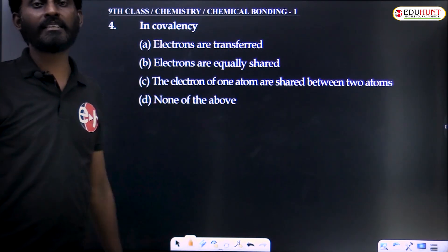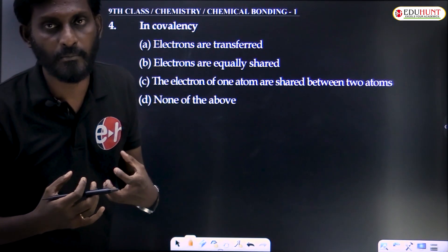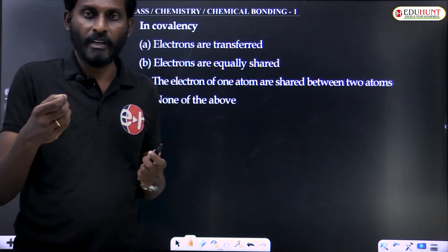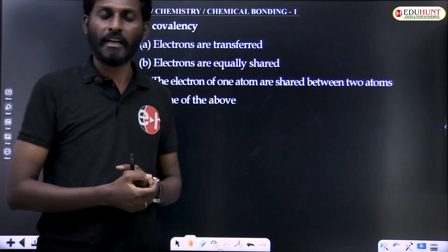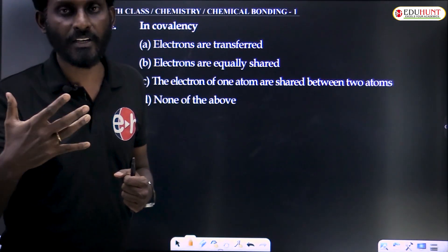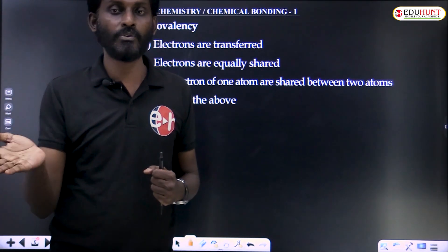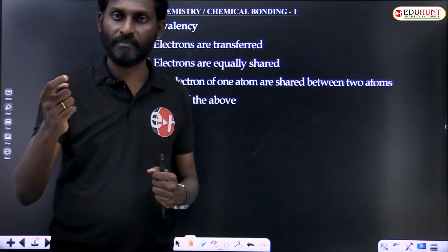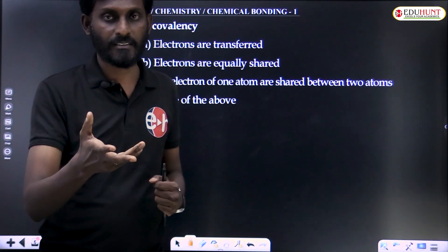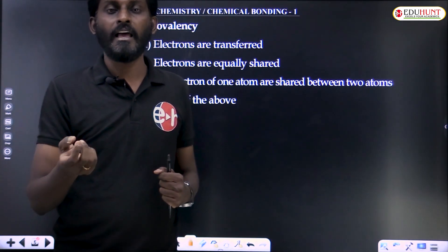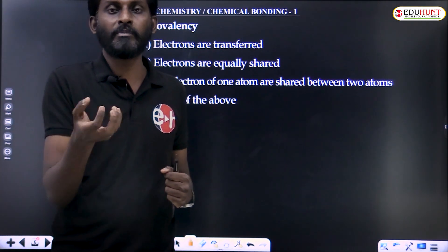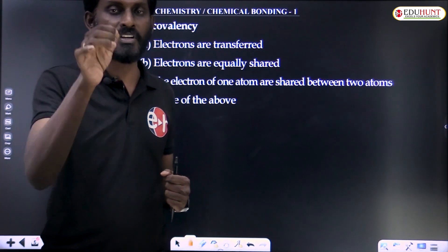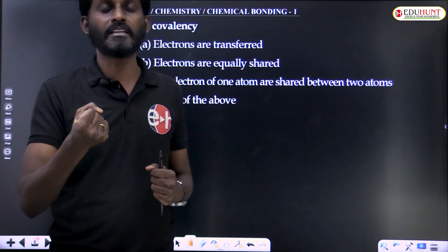In covalency, covalent bonds form in compounds where covalent bond forming atoms share one or more electrons to get a stable configuration. Sometimes an atom can lose electrons, or an atom can gain electrons. That number is called valency. And sometimes, in many cases, to get a stable configuration, an atom will contribute electrons for sharing.